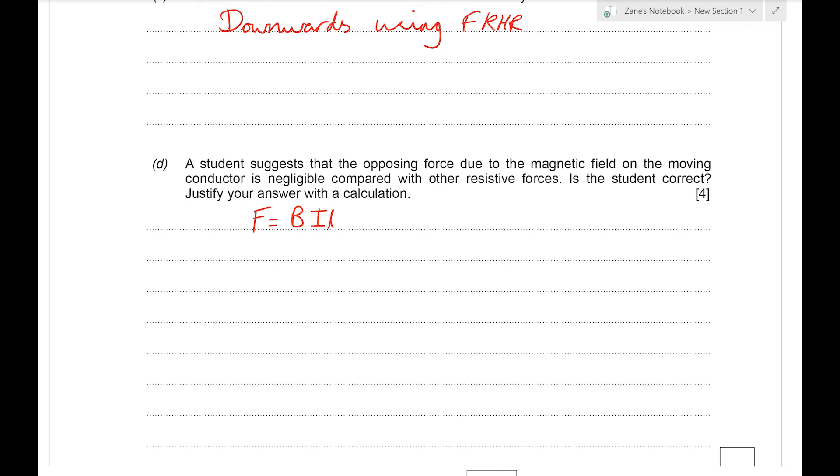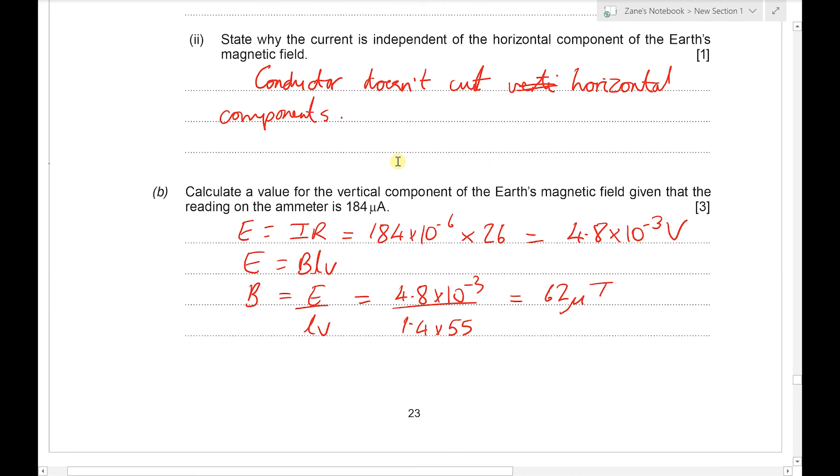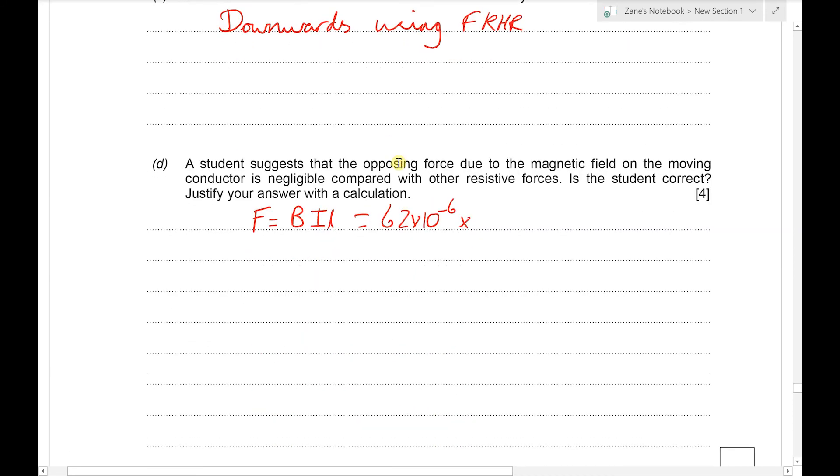So we had 62 microteslas, the current was 184 microamps, and the length was 1.4 meters. If we put those into a calculator we end up with 1.6 times 10 to the minus 8 newtons.